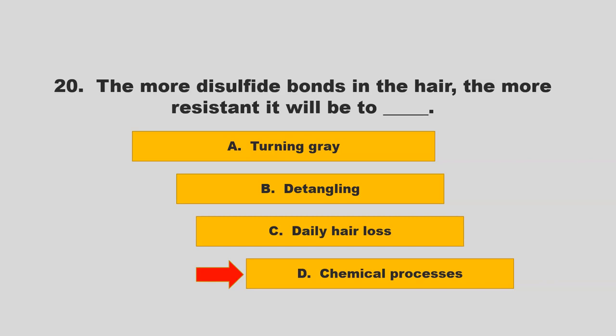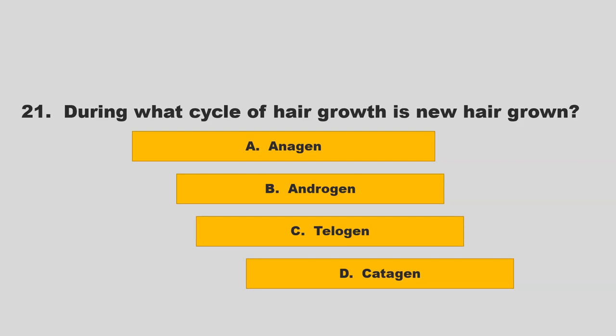During what cycle of hair growth is new hair grown? Is it anagen, androgen, telogen, or catagen? If you chose A, anagen, you are correct.